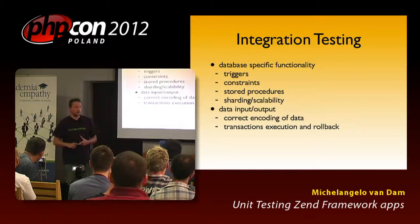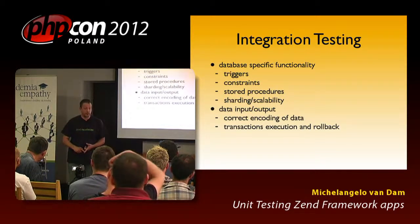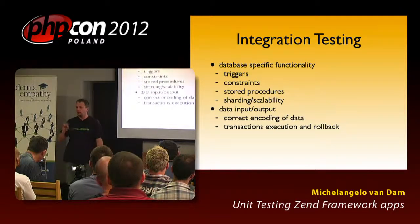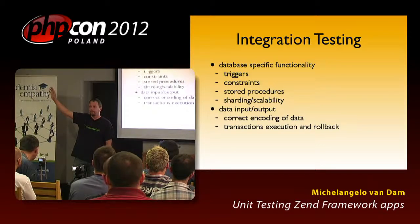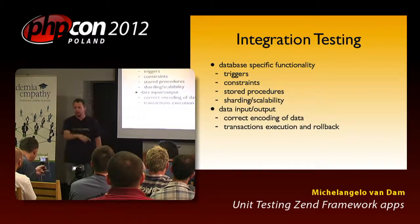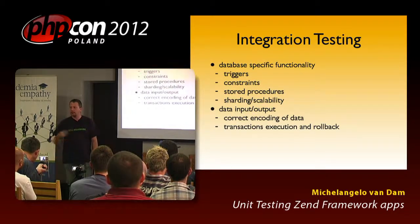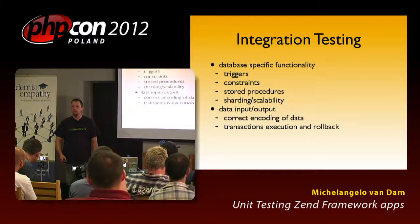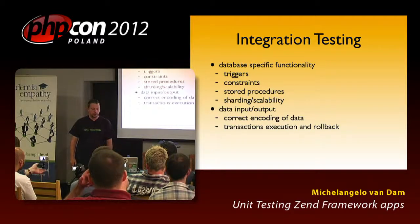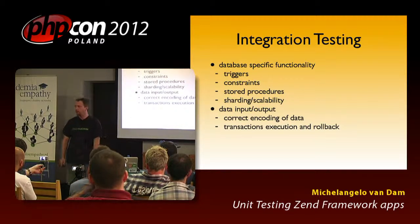Secondly, we want to test data input and output, correct encoding of data. How many times have you experienced that you put UTF-8 in and on the website it comes out wrong? Transaction execution and rollback — if you're processing transactions and all of a sudden it breaks, you need to be able to roll back. You need to test this — does it really work that way? So even though everyone says it's integration testing, I do feel it's part of your unit testing.